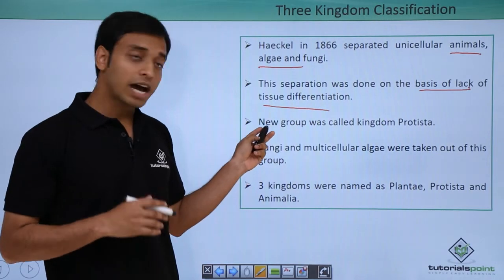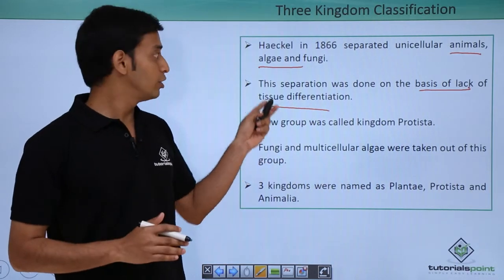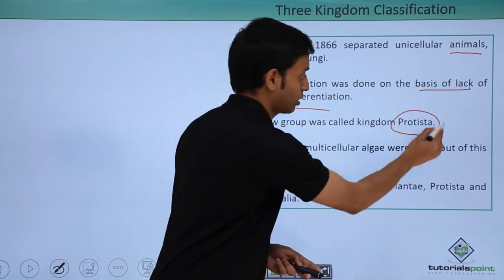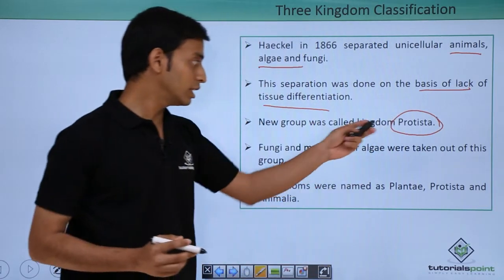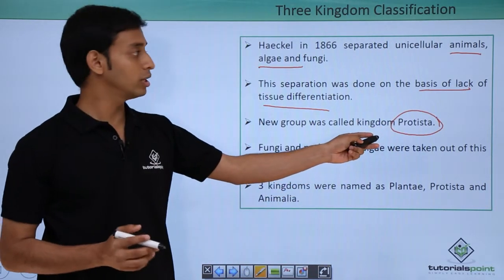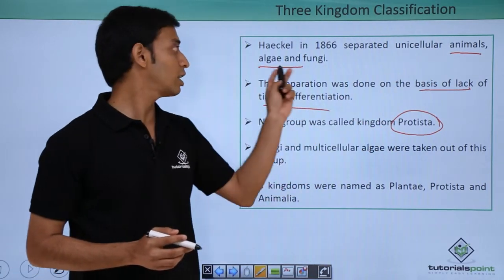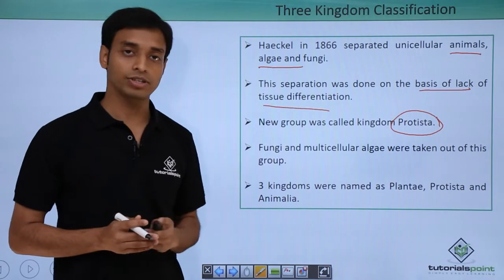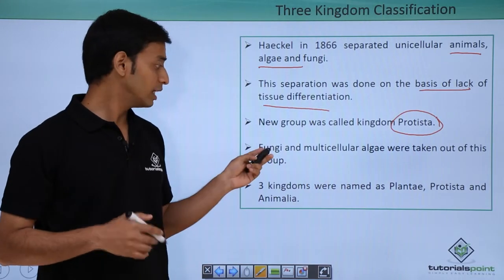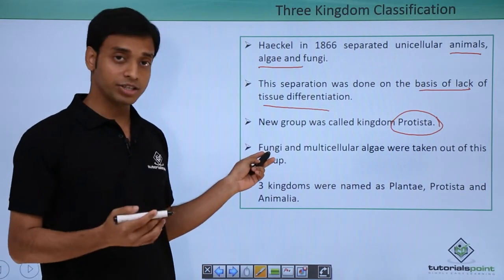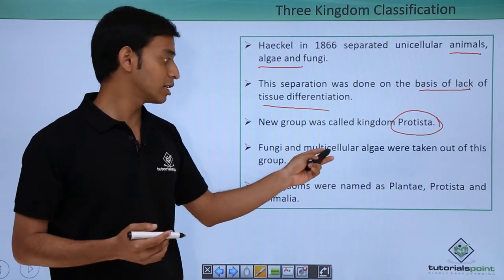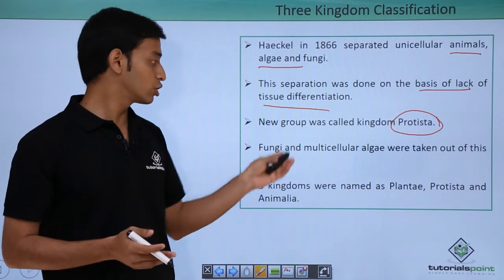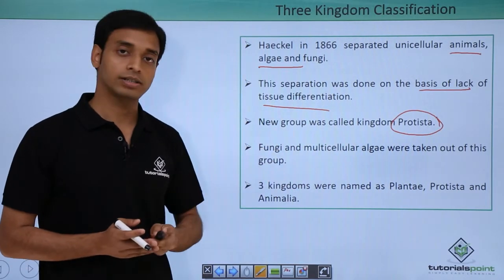A new group was introduced by Haeckel called the Kingdom Protista. This kingdom included all unicellular animals, algae, and fungi. Later on, fungi and multicellular algae were taken out of this group Protista.